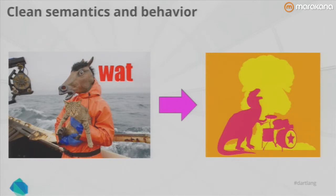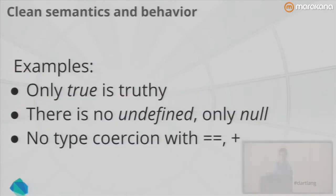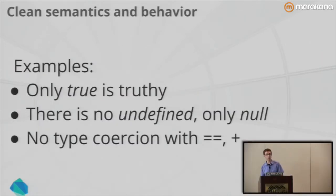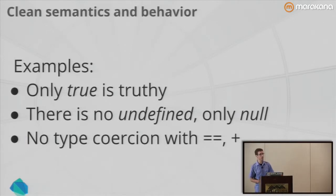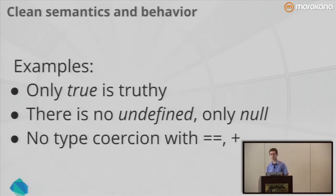Dart is its own language — it's not just syntax pasted over traditional web programming. Dart brings its own semantics. We want to turn the 'wat' moments of traditional web programming into clear errors. Some examples: only true is truthy, everything else is false — a very simple rule. In Dart, there is no undefined, only null, eliminating that confusion. There's no automatic type coercion like you get in JavaScript with double-equals or plus — right there, eliminating a bunch of those unfamiliar behaviors.